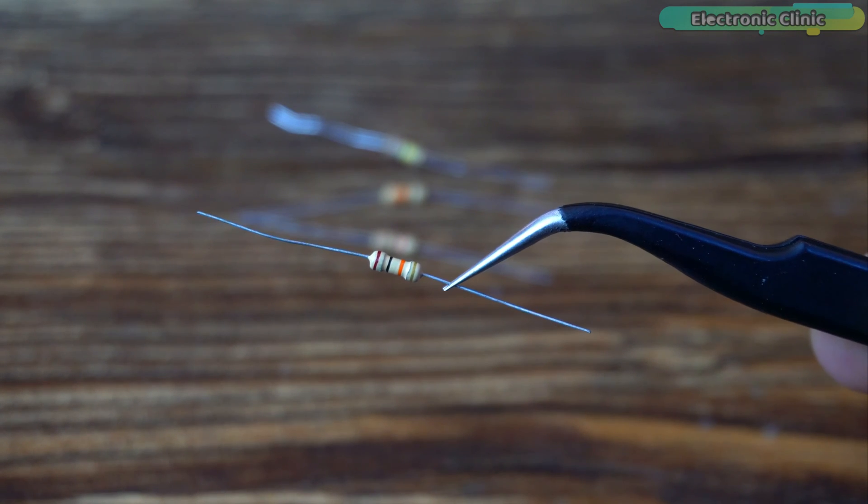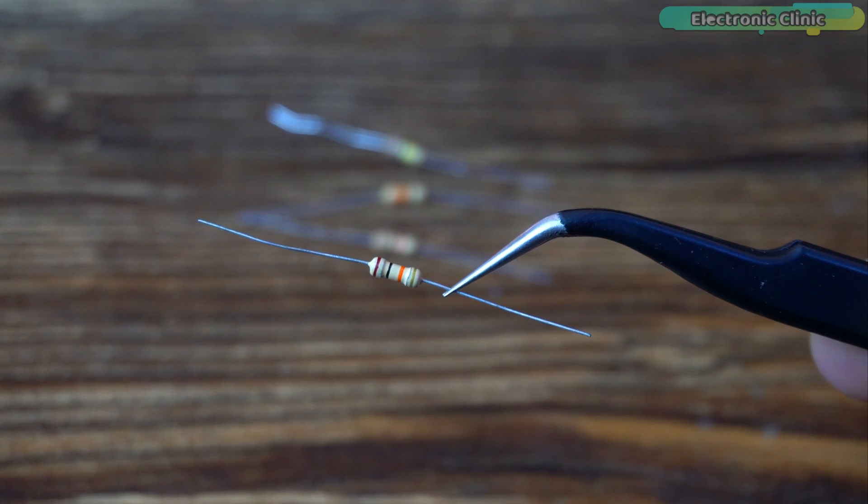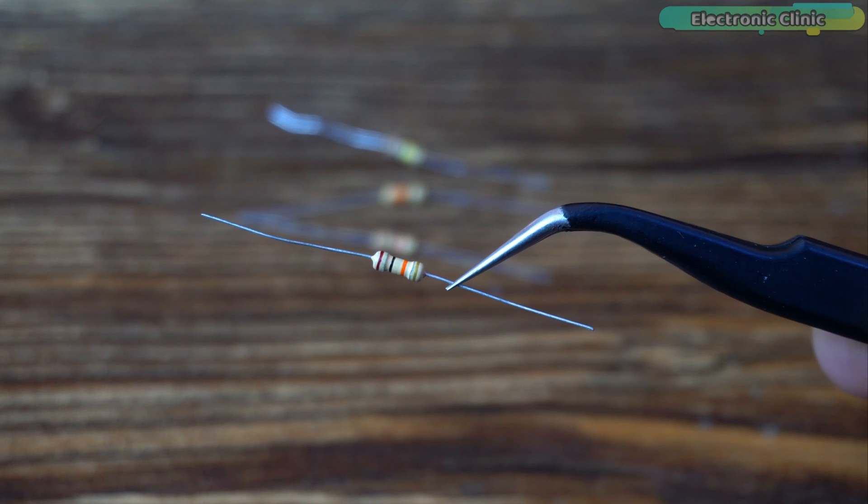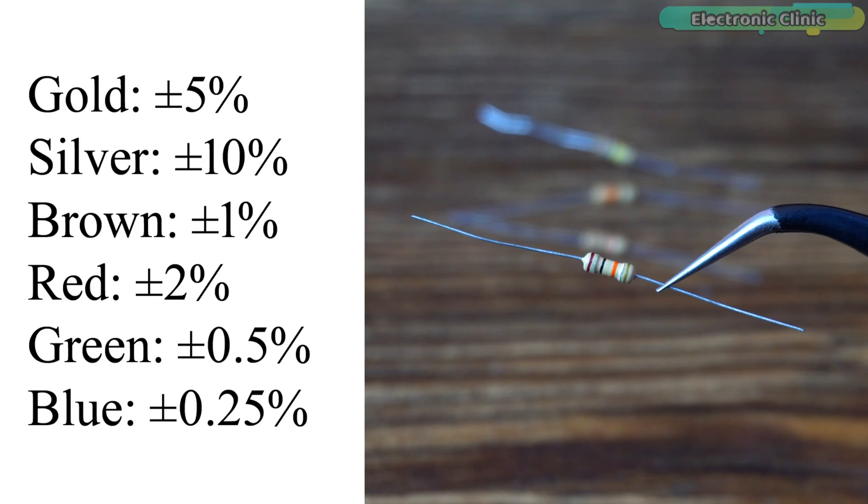In a four band resistor the tolerance band can have different colors depending on the tolerance value. The most common colors for the tolerance band are gold, silver, brown, red, green and blue representing tolerance values of plus minus five percent, ten percent, one percent, two percent, point five percent and point two five percent respectively.